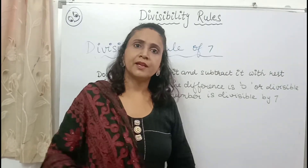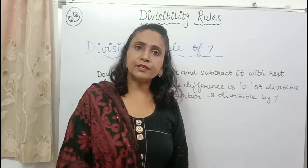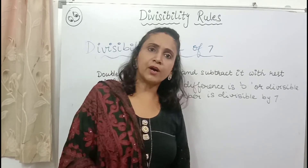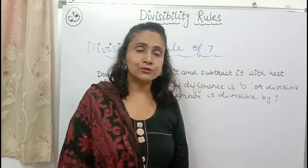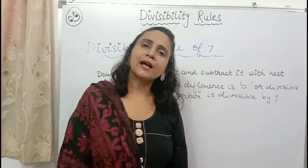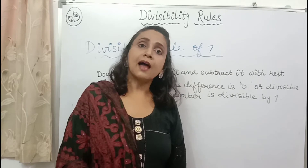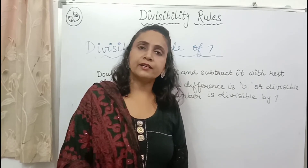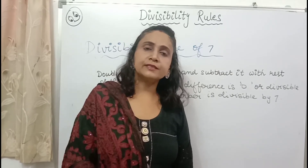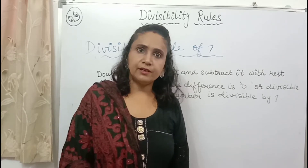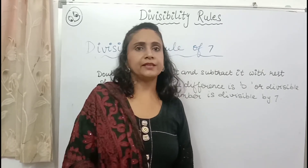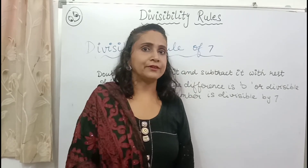Divisibility rule of 7. Now the divisibility rule of 7 is a little difficult, but if you understand it, it is very easy. Just a little practice is required. Double the last digit and subtract it from the rest of the number. If the difference is 7, a multiple of 7, or 0, then the number is divisible by 7.